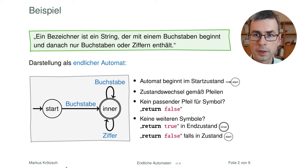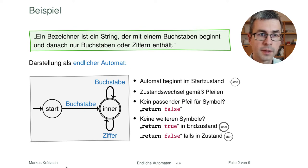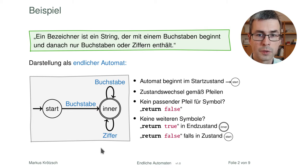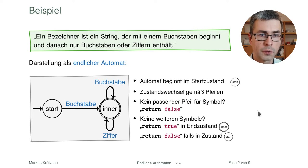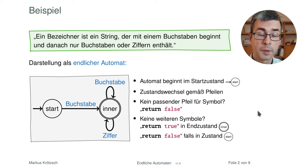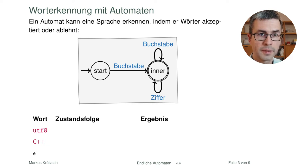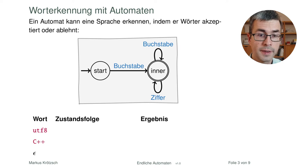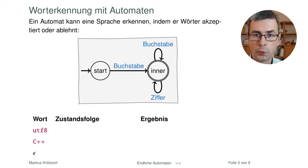Ein Bezeichner ist ein String, der mit einem Buchstaben beginnt und danach nur Buchstaben oder Ziffern enthält. Das konnte man auf viele Arten darstellen, unter anderem auch mit einem endlichen Automaten aus zwei Zuständen. Ich möchte Ihnen noch mal konkret im Beispiel zeigen, wie das für ein paar Eingaben funktioniert.